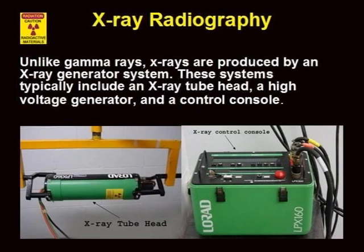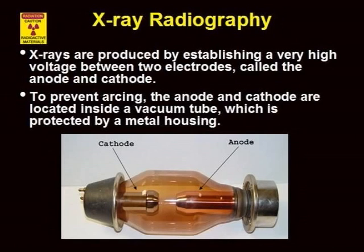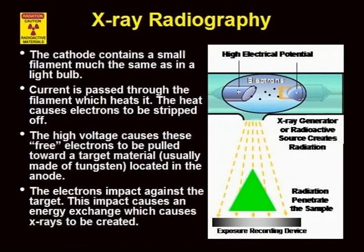X-ray generator systems are a lot easier to use and potentially safer than gamma-ray sources. For one thing, they can be turned off; for another, the energy is adjustable and the exposure time can be set. The components of the system include an x-ray tube head, high voltage generator, and control console. A very high voltage is placed across the cathode and anode of the x-ray tube. A vacuum inside the tube prevents arcing. The cathode end of the tube also contains a small filament, which when heated creates free electrons. The high voltage between cathode and anode accelerates the electrons toward the anode. The electrons crash into the anode with very high energy, and some of this energy excites electrons in the atoms of the target. When these excited electrons decay back down to the normal energy state, some x-rays are generated. The target material is usually tungsten, but other materials are possible for different ranges of x-ray wavelength.